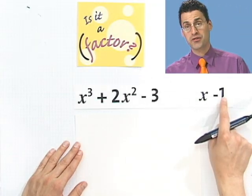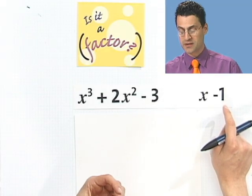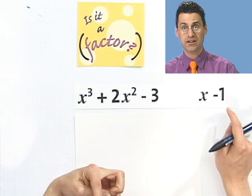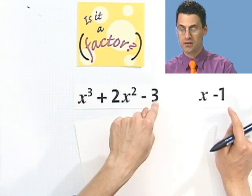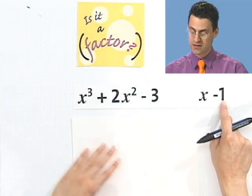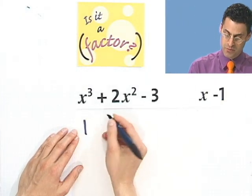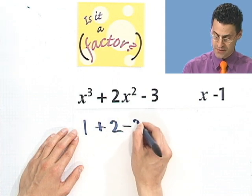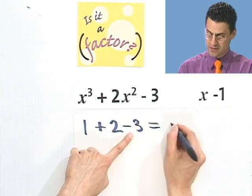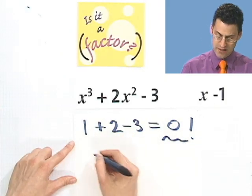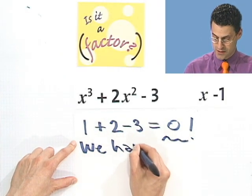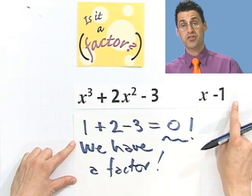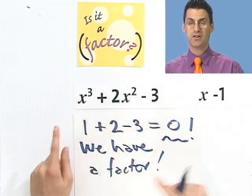Remember, I plug a 1. I don't plug a minus 1. Remember, the factor I'm considering is x minus k. And to see if it's a factor, I plug in just k alone into the polynomial. So you always have to remember to switch that sign. So I look now at 1, and I see 1 cubed, which is 1, plus 2 times 1, which is 2, minus 3. Well, 1 plus 2 is 3, minus 3 is 0. Aha! We have a factor.